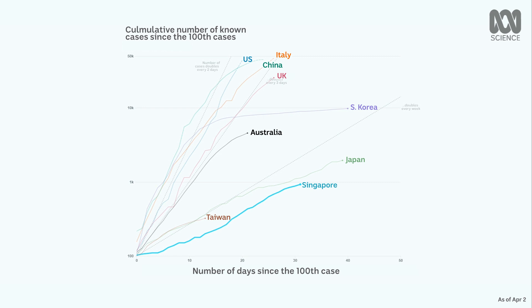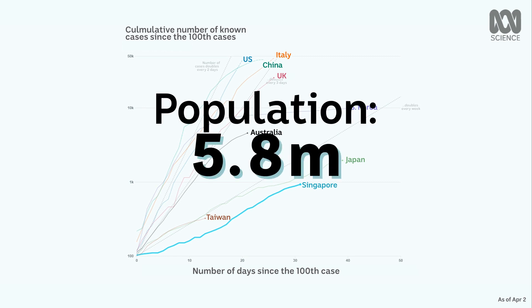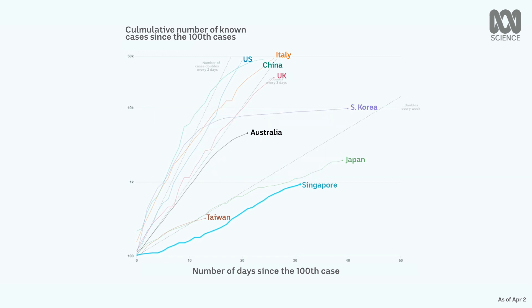To date, Singapore has not closed schools. These measures may work in a city-state like Singapore, but would they work in a bigger country, and could you use them to control COVID-19 once it gets into the community?